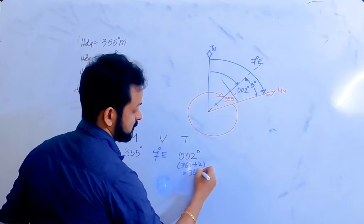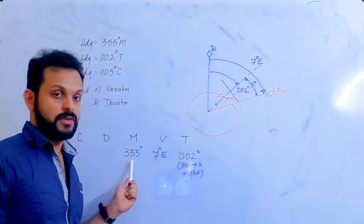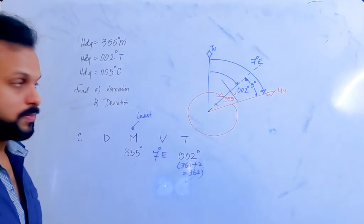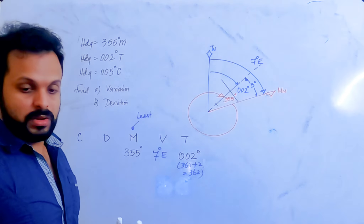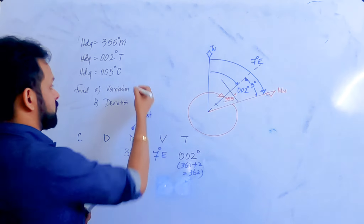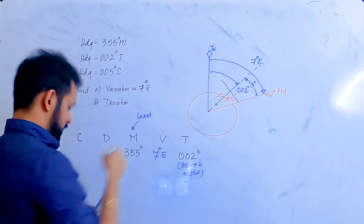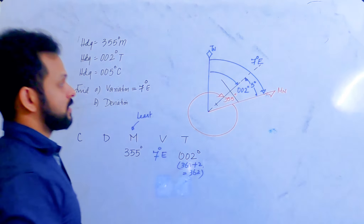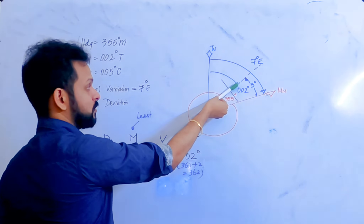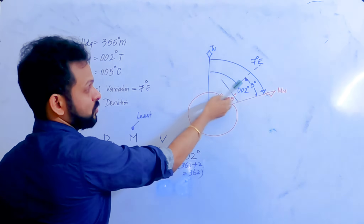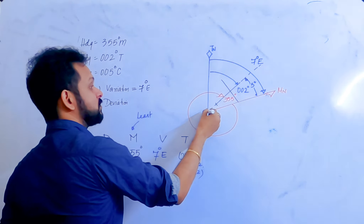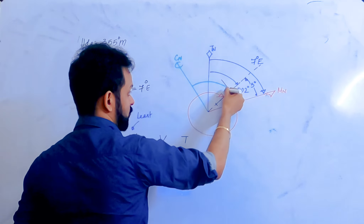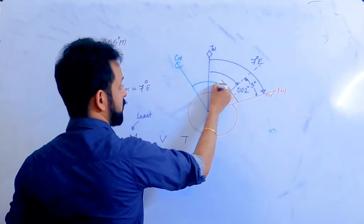Comparing 362° with 355°, we see 362 is more and 355 is less — magnetic is least, therefore variation is East. Now for deviation: compass heading is 5°, always measured from the heading of the aircraft. Going anti-clockwise from the heading by 5° takes you 3° further west of true north — since that 2° arc was already covered. So compass north sits 3° to the west of true north.